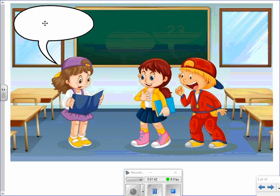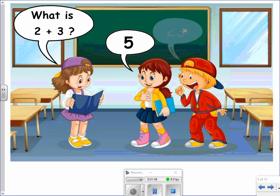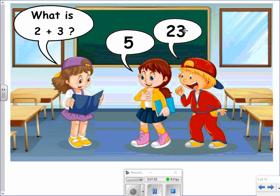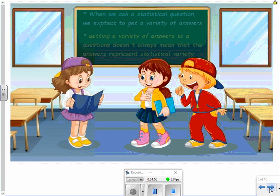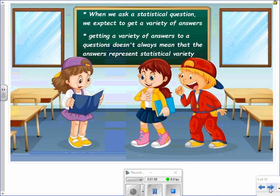Just because a question has various answers doesn't mean that that's necessarily a statistical question. For example, what is 2 plus 3? You might get various answers, but there's really only one valid answer to that question. When we ask a statistical question, we expect to get a variety of valid answers. But getting a variety of answers to a question doesn't always mean that the answers represent statistical variability.